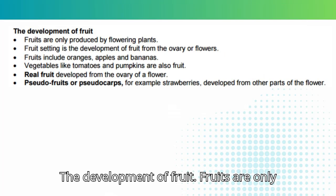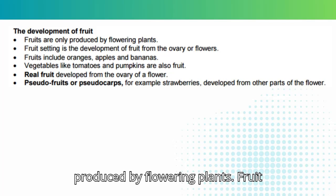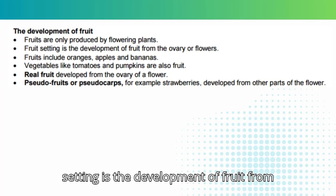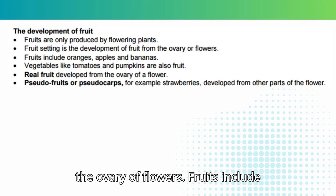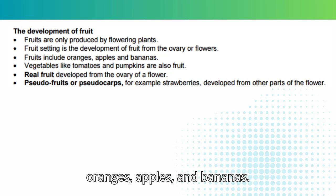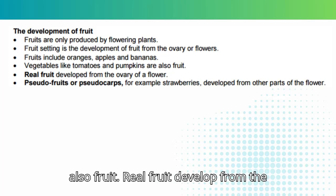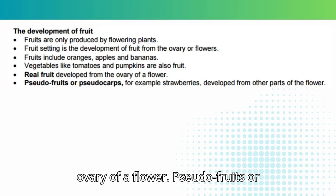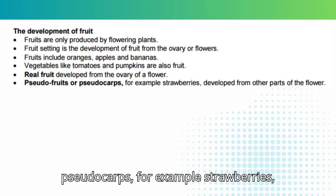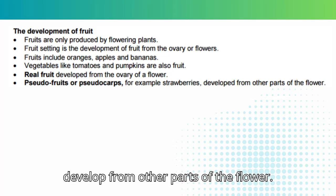The development of fruit. Fruits are only produced by flowering plants. Fruit setting is the development of fruit from the ovary or flowers. Fruits include oranges, apples and bananas. Vegetables like tomatoes and pumpkins are also fruit. Real fruit develops from the ovary of a flower. Pseudo-fruits or pseudocarps, for example strawberries, develop from other parts of the flower.